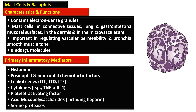Histamine is responsible for urticaria and gastrointestinal symptoms. Prostaglandin D2 is responsible for onset of flushing, cardiovascular symptoms, bronchoconstriction, and gastrointestinal symptoms. Heparin induces bleeding into tissue and osteoporosis. Neutral proteases and acid hydrolases are responsible for patchy hepatic fibrosis and bone lesions.